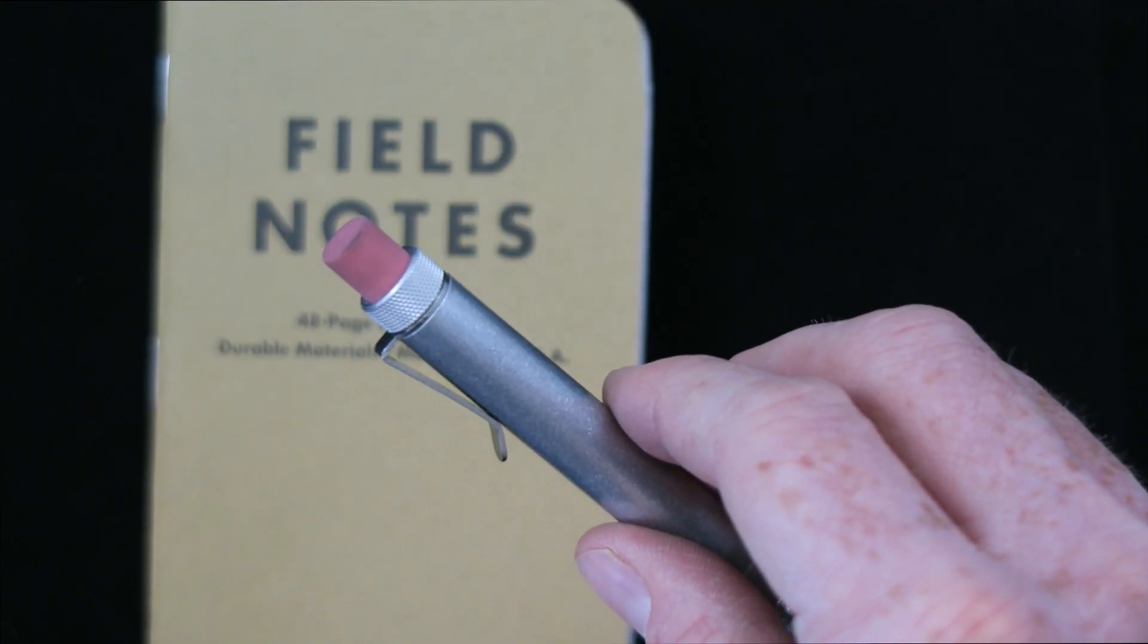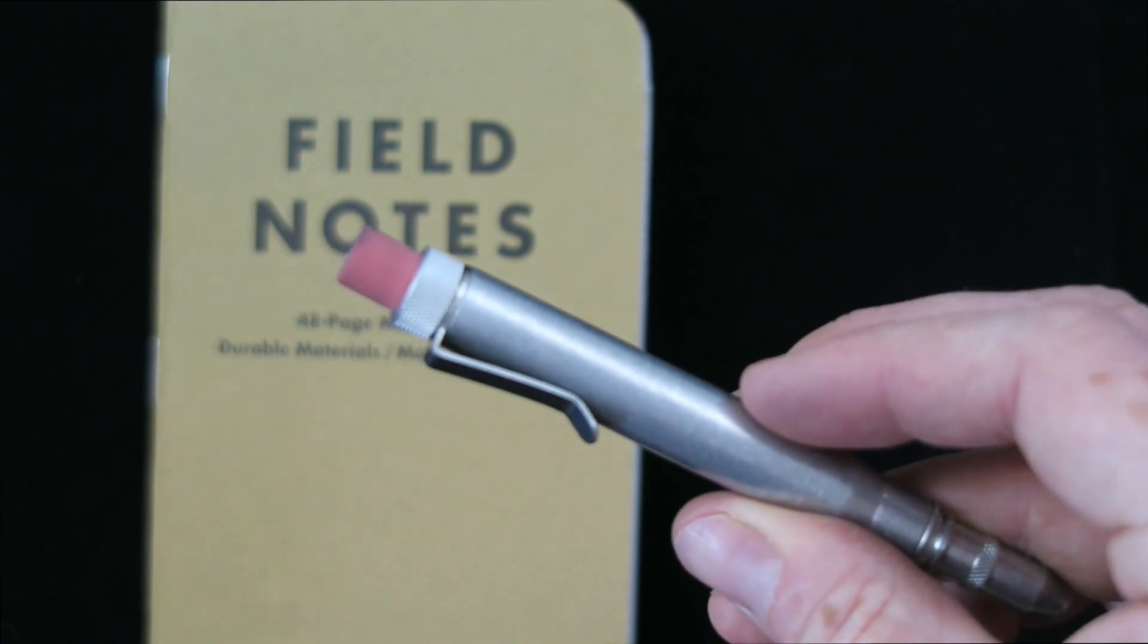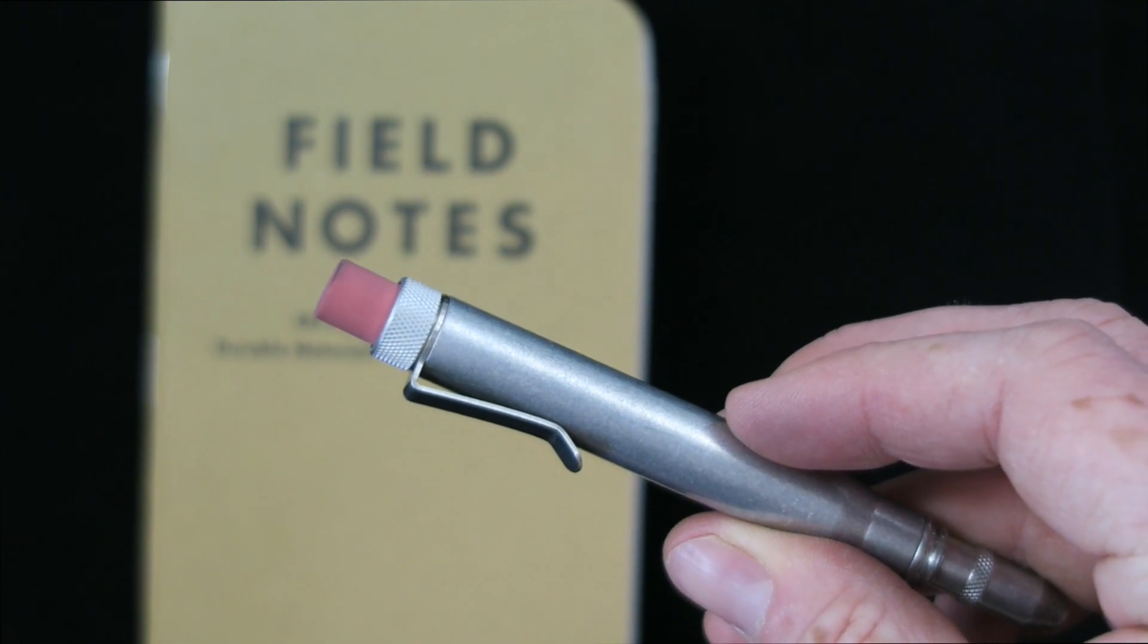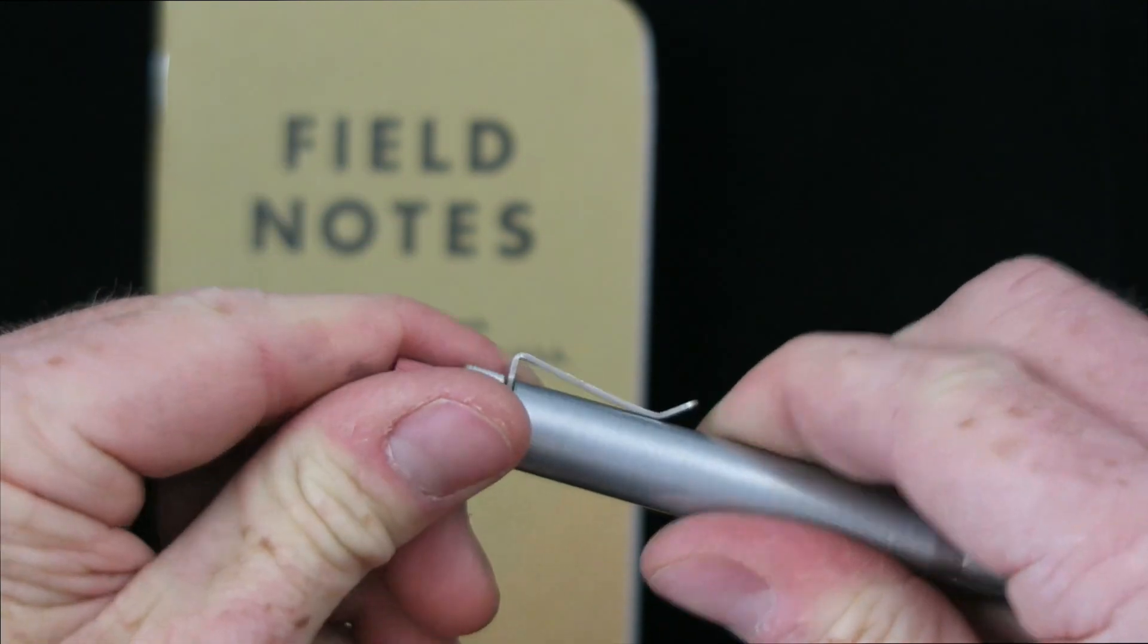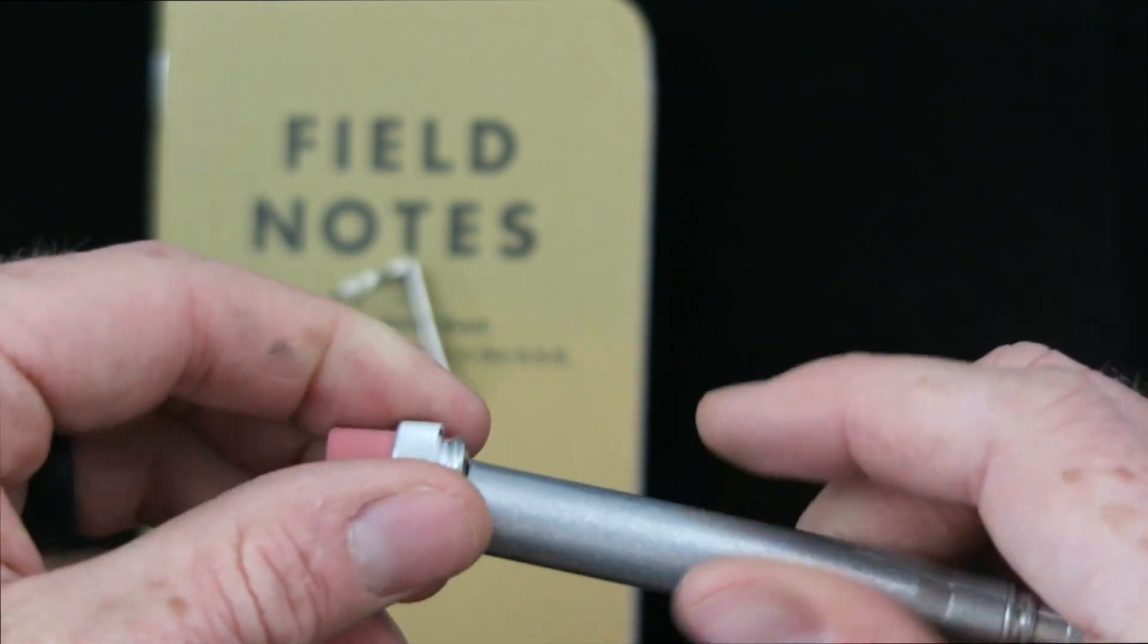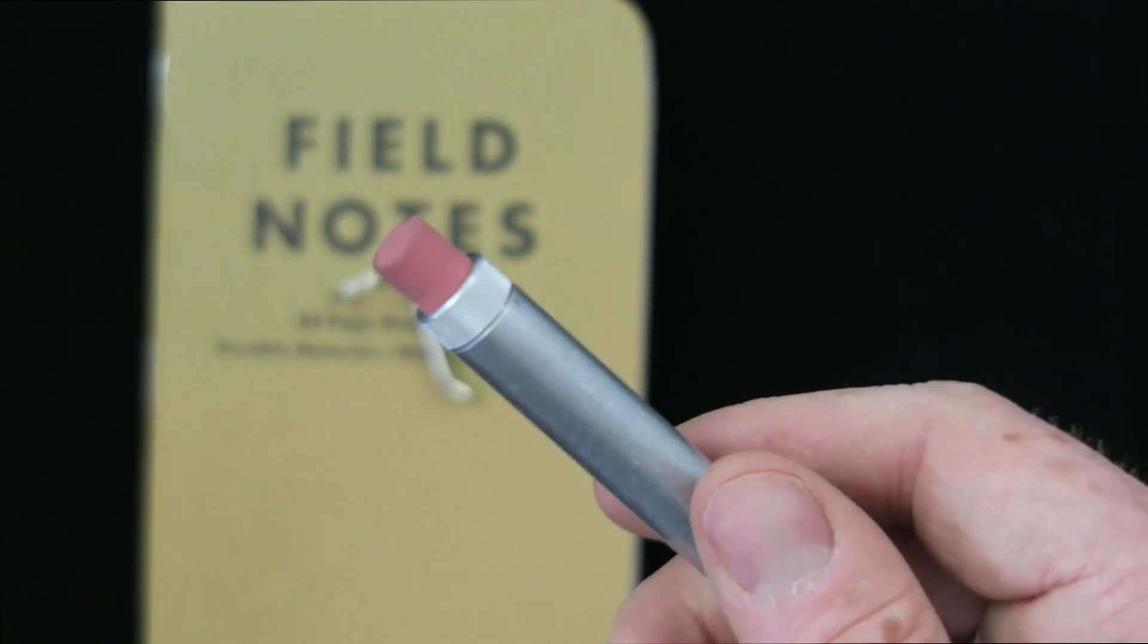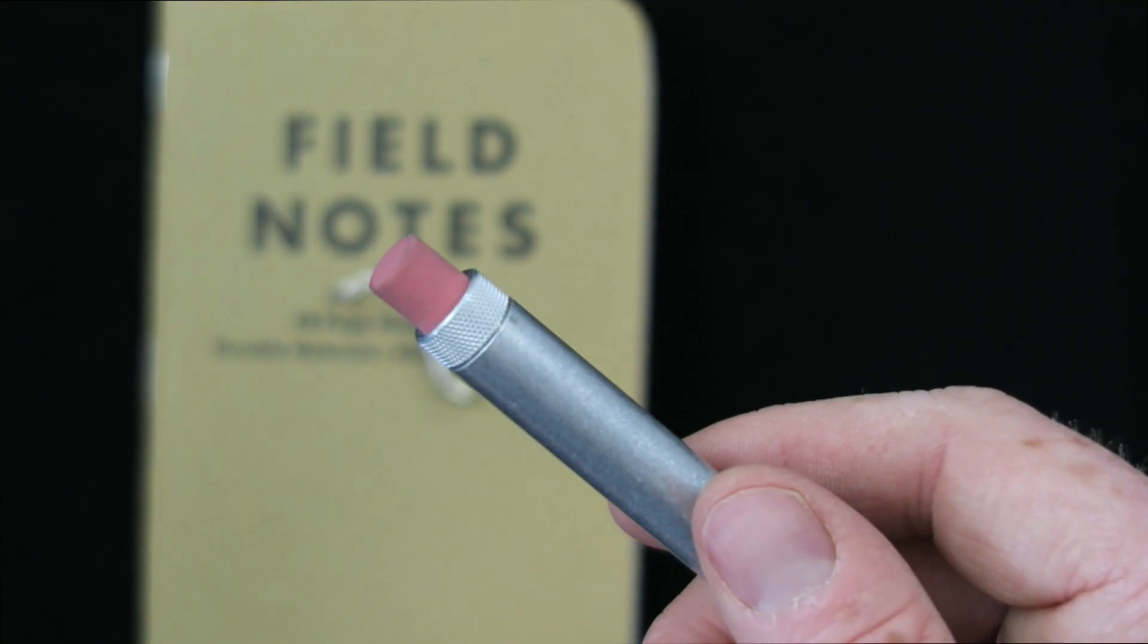So as you can see here, this is the eraser cap and pocket clip configuration. Now if we want to switch it over to eraser cap only with no clip, simply screw off the eraser cap, remove the clip, and screw it back on there. That gives you the eraser cap only configuration.